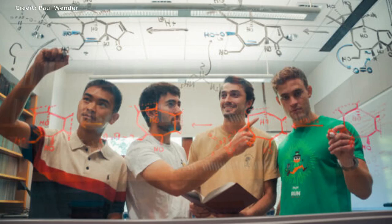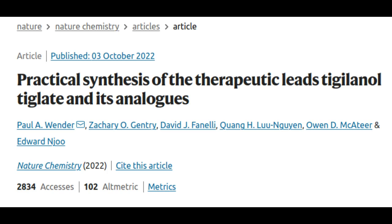Stanford University researchers have discovered a rapid and sustainable way to synthetically produce a promising cancer-fighting compound right in the lab. The compound's availability has been limited, because its only currently known natural source is a single plant species that grows solely in a small rainforest region of northeastern Australia.